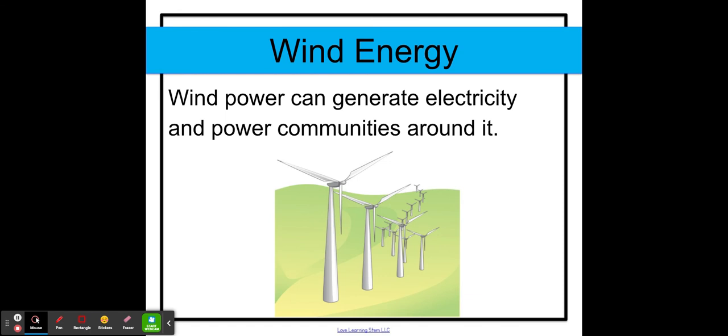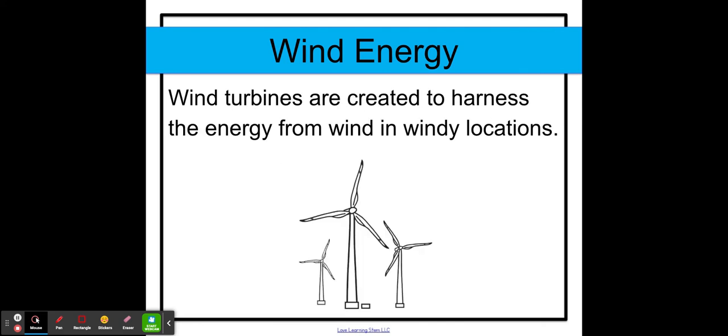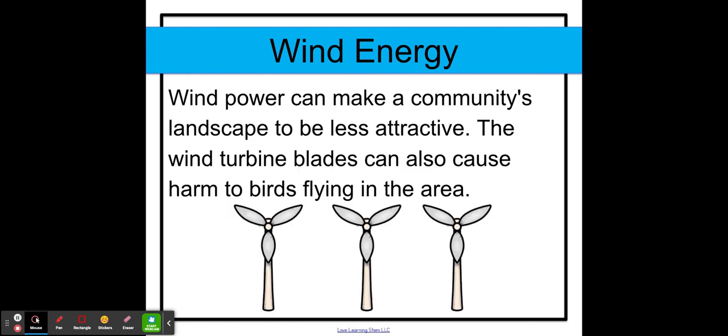And the last one we're going to be going over is wind energy. Wind power can generate electricity and power communities around it. These wind turbines are created to harness the energy from wind in windy locations. Wind power can make a community's landscape less attractive, so that's a drawback. And the wind turbine blades can also cause harm to birds flying in the area.